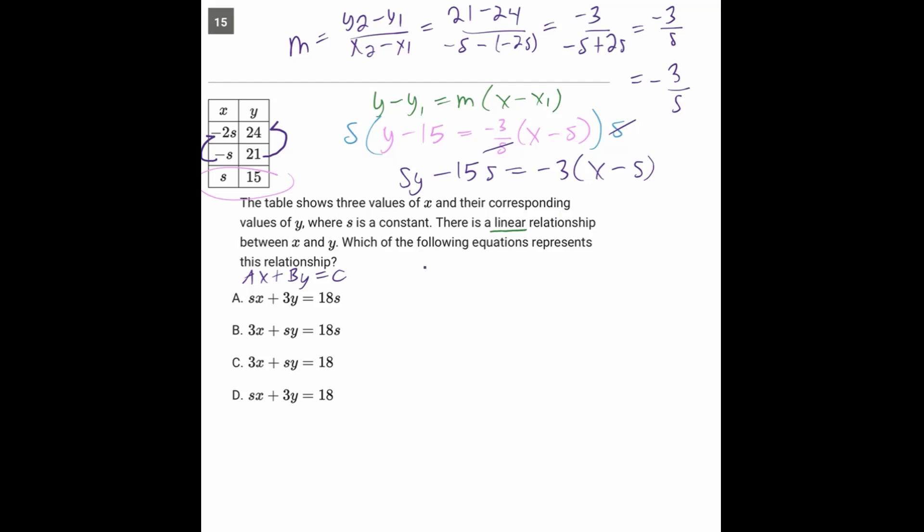Now distribute on the right. sy minus 15s equals negative 3x plus 3s. And now what we're trying to do is get standard form, so we're trying to get x and y on one side and everything else on the other side. So I'm going to add 3x to both sides and also add 15s to both sides.